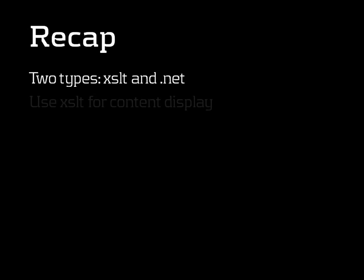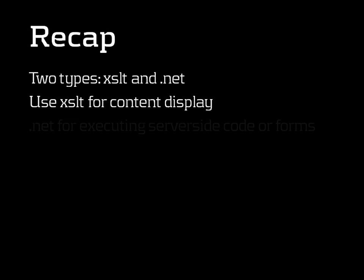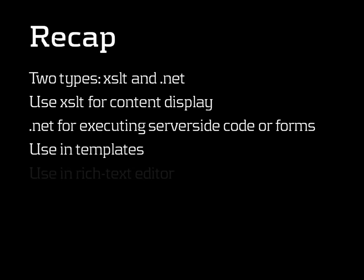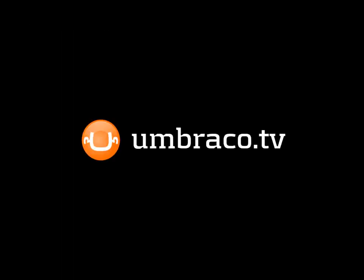To recap: we've learned there are two types of macros — XSLT and .NET. XSLT macros are used for displaying content, fetching raw data from Umbraco and displaying it in templates or the rich text editor. .NET macros are for executing server-side code or forms in the template, using user controls or custom controls. Both macro types can be used in templates and in the rich text editor. Macros support caching and offer a click-and-play experience — no hardcore coding required to use .NET controls from Umbraco's repository or templates.